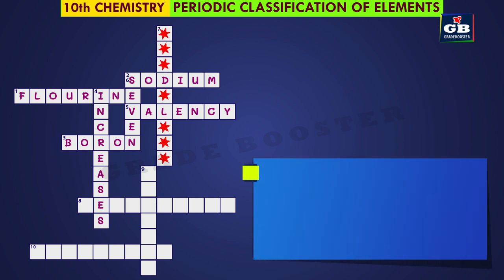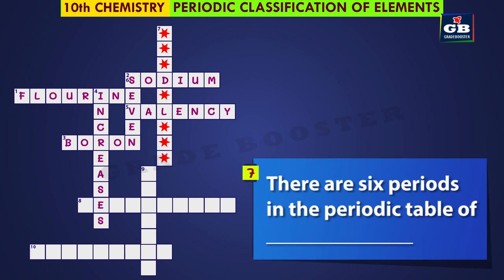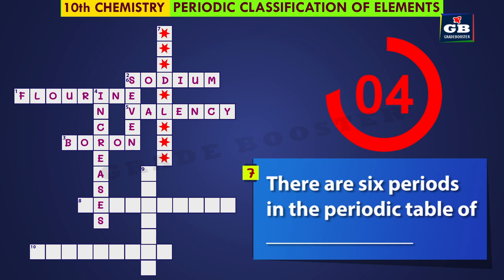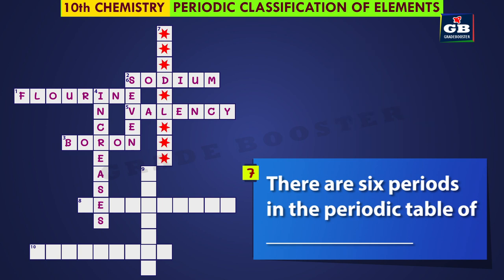Seven down: there are six periods in the periodic table of dash. What could be the answer? The answer is Mendeleev. There are six periods in the periodic table of Mendeleev.